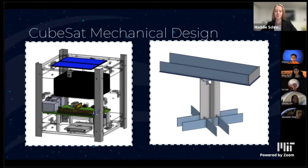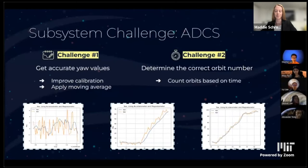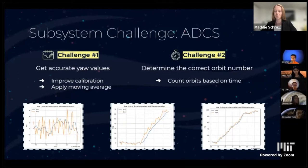For software, we split the CubeSat into three main subsystems: ADCS, imaging and processing, and communications. There were two main challenges working on ADCS. First, we had major trouble getting accurate yaw values — we improved calibration by adding soft-iron calibration equations and applying moving averages. The graphs show the progression of ADCS testing: orange values show raw yaw, blue values show yaw under the moving average. Second, we had trouble counting correct orbit numbers using ADCS, so we decided to count orbits based on time instead because it is more reliable and consistent than using actual ADCS angles.